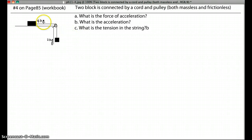Okay, so this example is on the workbook number four, page 85. Two blocks are connected by a cord through a pulley. The mass of each block is labeled here. Notice it says both massless and frictionless. This is very important to actually solve the problem. If we count the mass of the cord and the friction of the pulley, the question may become much more complicated.